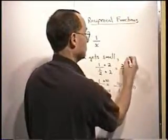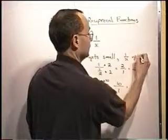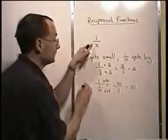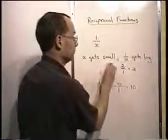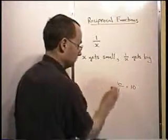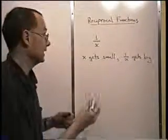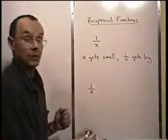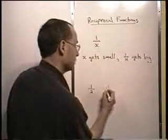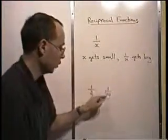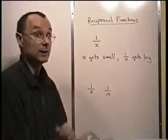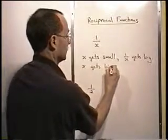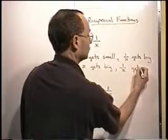So we note that as 1 over x gets bigger. Now what about when x becomes a larger number? If x is progressively getting bigger, we're going to be looking at things like 1 over 2, which is 1 half. If x gets bigger still, we get something like 1 tenth. So 1 over x is becoming progressively smaller. When x gets large, 1 over x gets small.